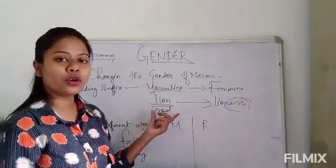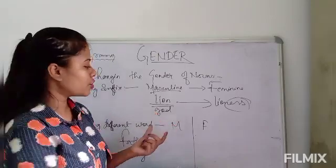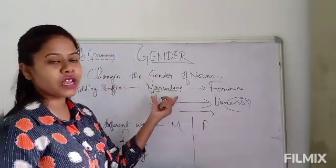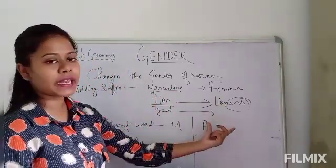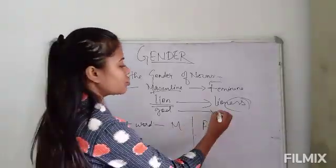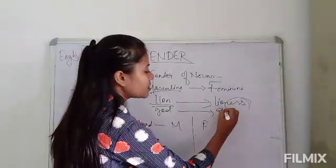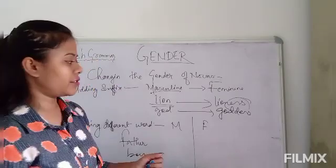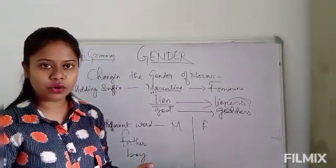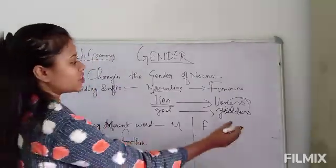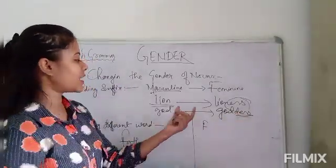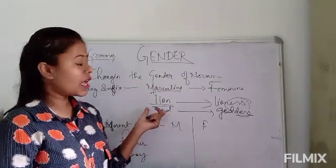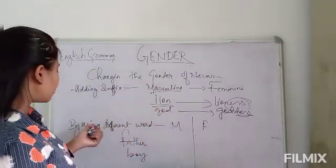Next is 'God'. Here also we will see that 'God' is masculine, and in feminine it becomes 'goddess'. So we just added the suffix at the end of the given word.